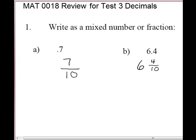And this one will reduce. 4 tenths, those are both even. So that will reduce by a factor of 2. We'll divide by 2. 2 into 4 will go 2 times. 2 into 10 will go 5.